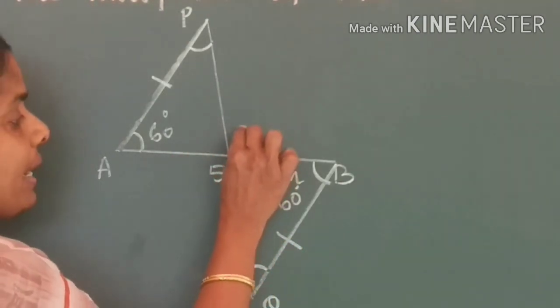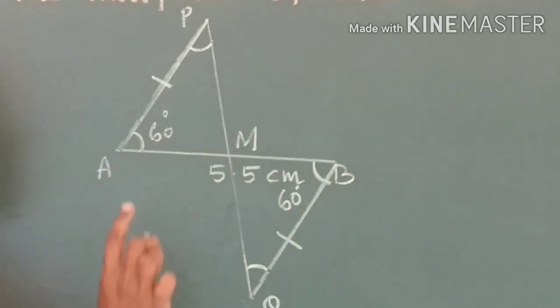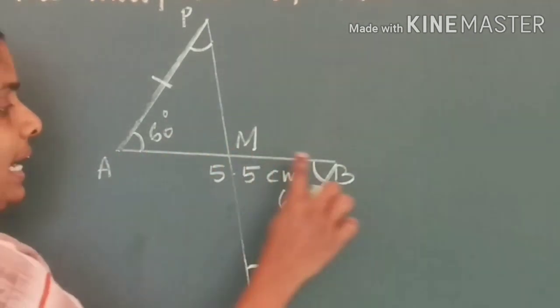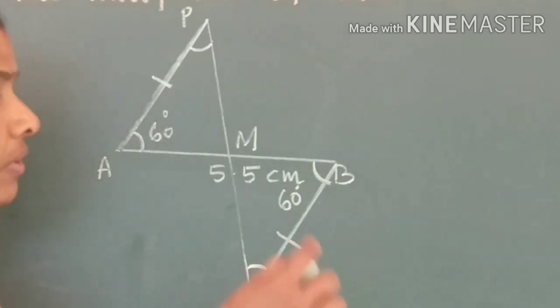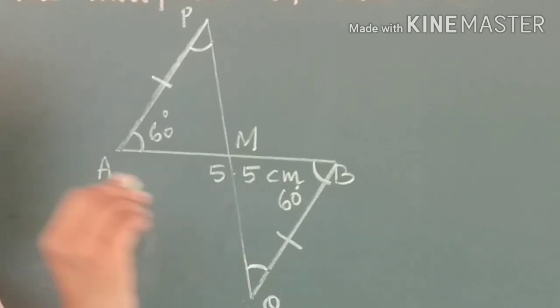These two triangles are equal triangles. So, if I mark the point, this intersecting point as M, I can say M is the midpoint of the line AB. Also, M is the midpoint of PQ also.